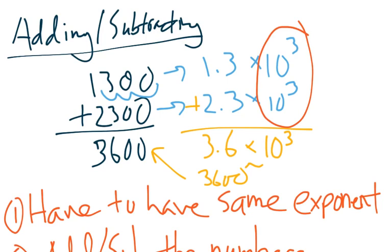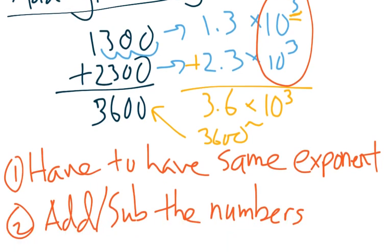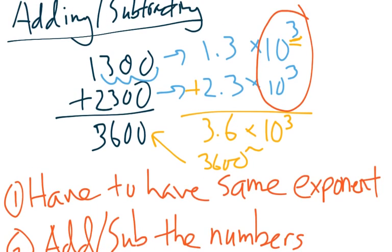And so the point of this is to be able to do something in scientific notation exclusively. Because as these numbers get larger, and you're talking about to the 9th power, the 12th power, the 15th power, you don't want to write all that out. You want to keep it simple. So that's what you do. First, make sure you have the same exponent. Then you add or subtract the numbers. Simple enough.